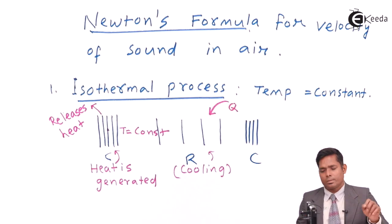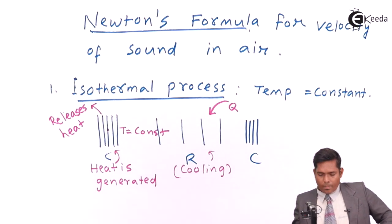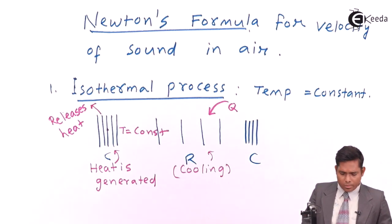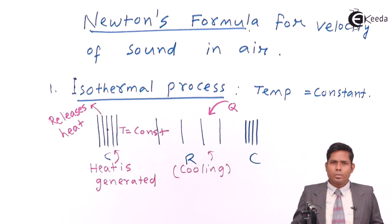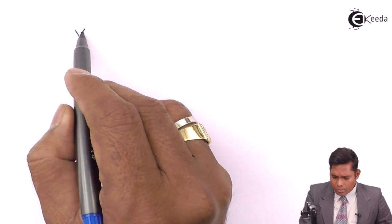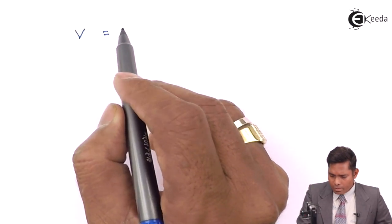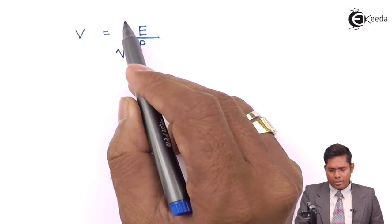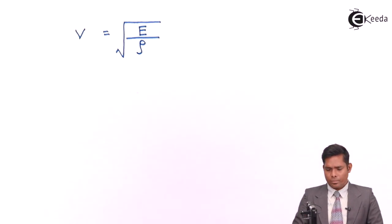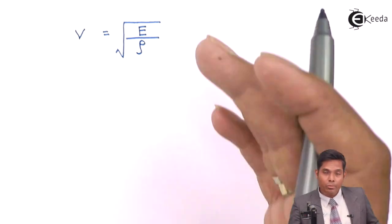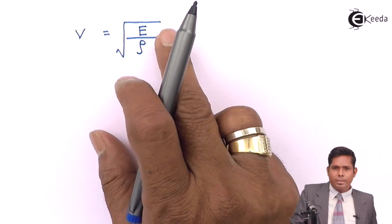Here it absorbs heat. Now, based on this assumption, Newton wrote the formula as follows. He says the velocity — we know that the velocity of sound, which is a longitudinal wave, is the square root of E divided by density (√(E/ρ)), which we have already discussed. So write the formula: the velocity of sound being a longitudinal wave is the square root of the elastic constant of the medium divided by the density. Here rho is the density of the medium, and the medium chosen is air. Air is the medium and E is the elastic constant.